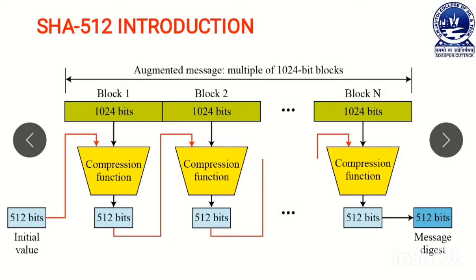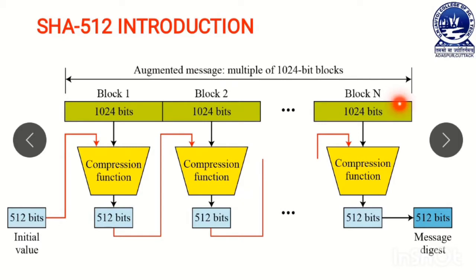Introduction to SHA-512 algorithm. Look at this figure. Here, that is the augmented message, which size is a multiple of 1024 bits. This augmented message is divided into n number of blocks — block 1, block 2, up to block n. Block 1 has a size of 1024 bits, and block 2 also has a size of 1024 bits. That means, the augmented message is divided into n number of blocks and each block size is 1024 bits.